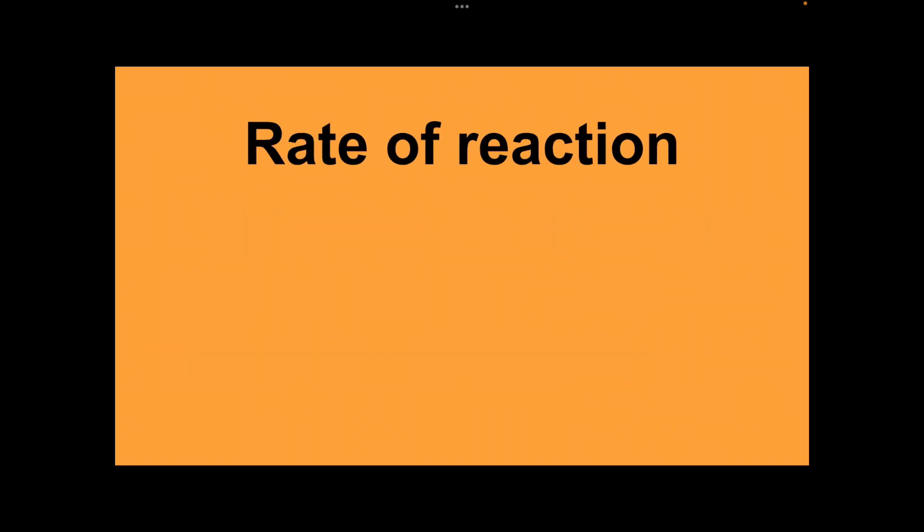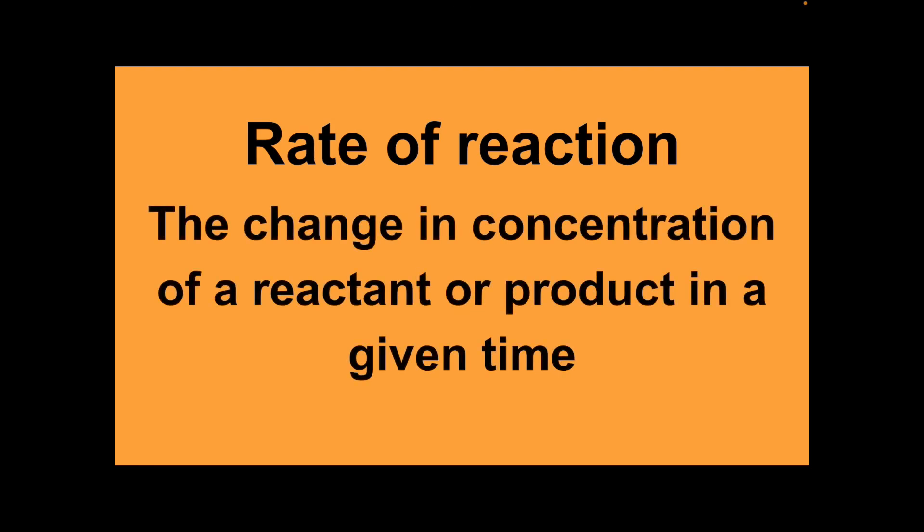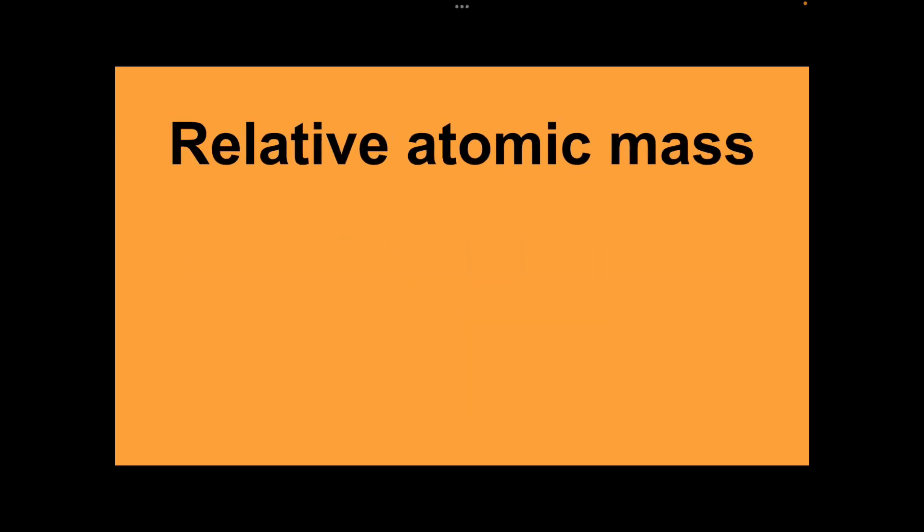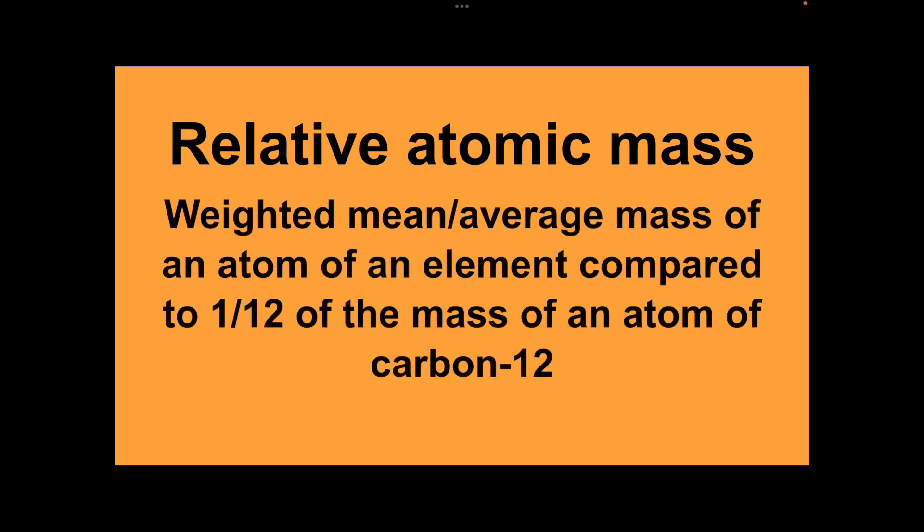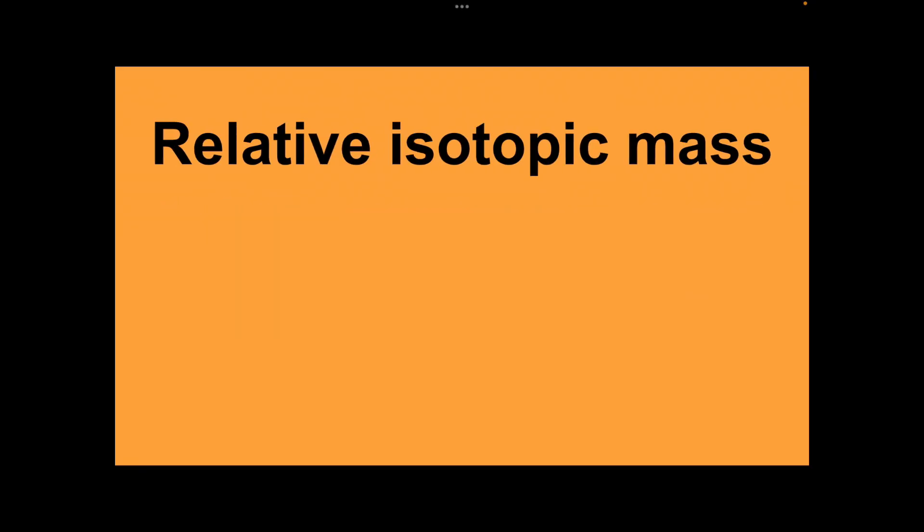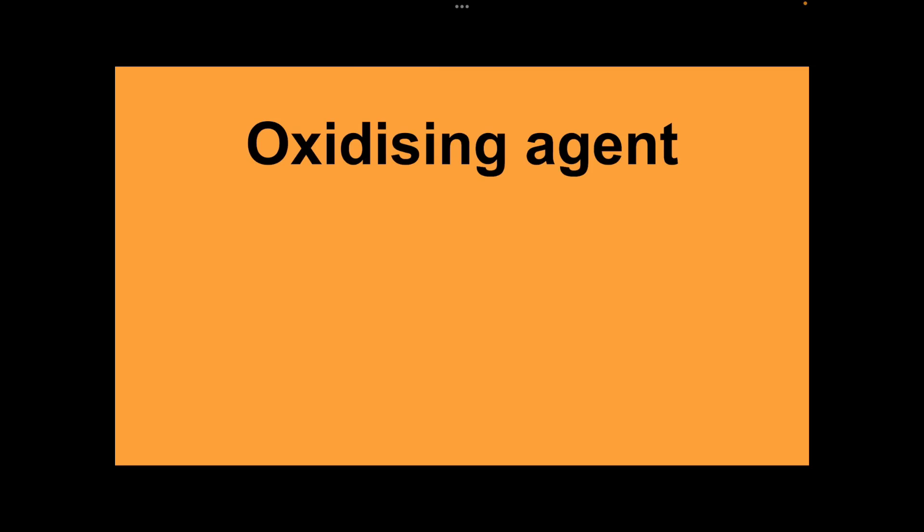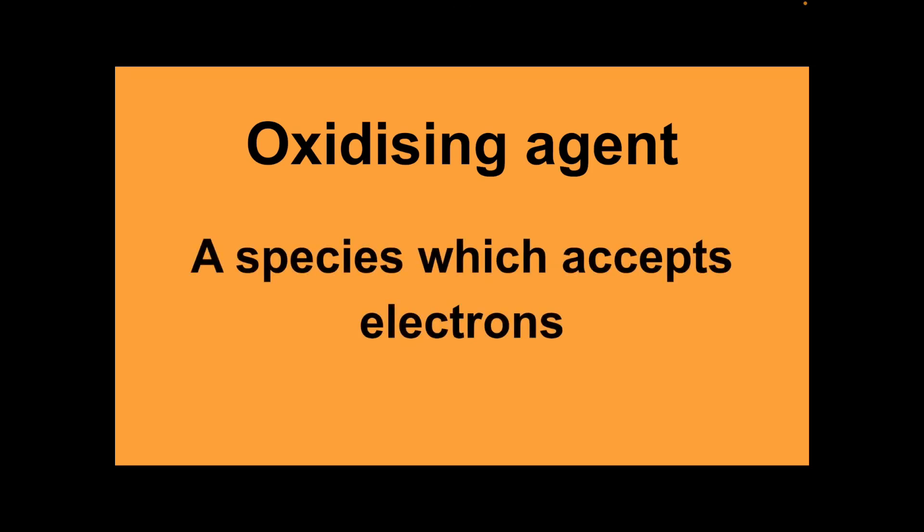Rate of reaction: the change in the concentration of a reactant or product in a given time. Reducing agent: a species which donates electrons. Relative atomic mass: the weighted mean mass or the average mass of an atom of an element compared to one twelfth of the mass of an atom of carbon-12. Relative isotopic mass: the mass of an isotope compared to one twelfth of the mass of an atom of carbon-12. Oxidising agent: a species which accepts electrons.